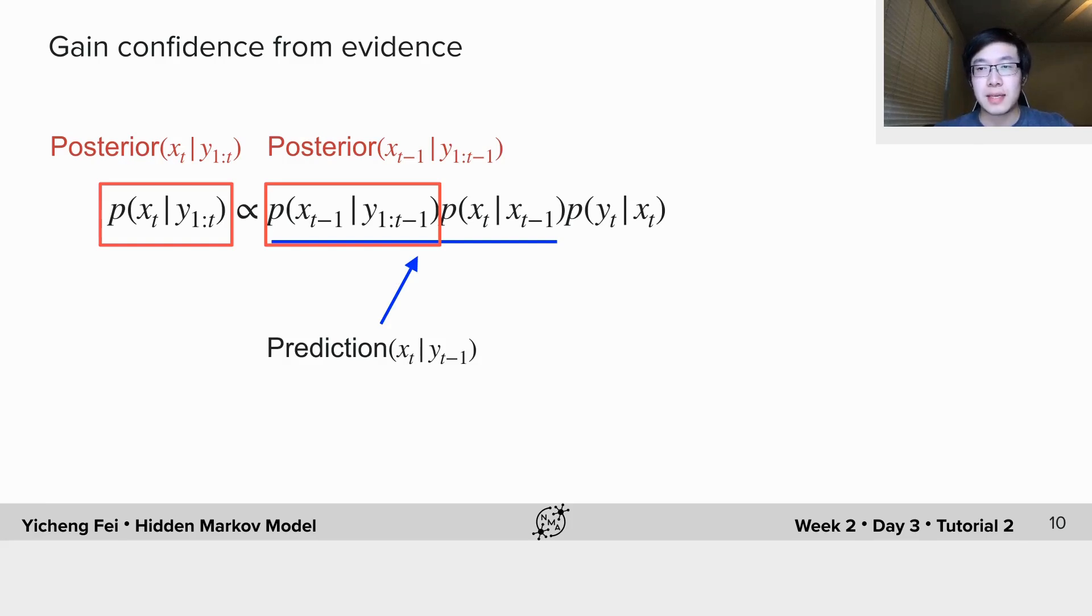This is the same form as the equation in exercise 2 actually, except we replace the predictive probability by the posterior probability after using evidence. Then we can just multiply our prediction probability with the likelihood of new data points and normalize over all discrete states.